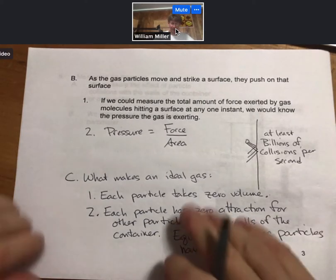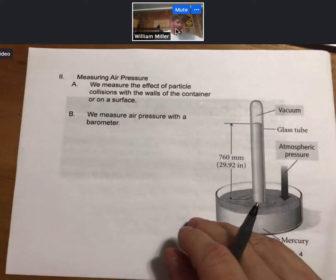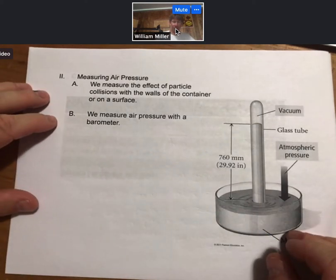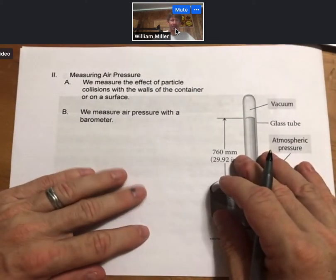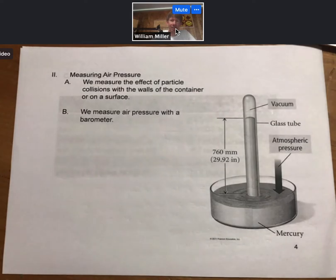We'll talk more about what makes an ideal gas shortly. Now, measuring air pressure. This is something we can do. This is something that has been done for hundreds of years. We measure the effect of particle collisions with the walls of the container or on a surface. And one way to do this, and more or less the original way of doing it, was measuring air pressure with a barometer.